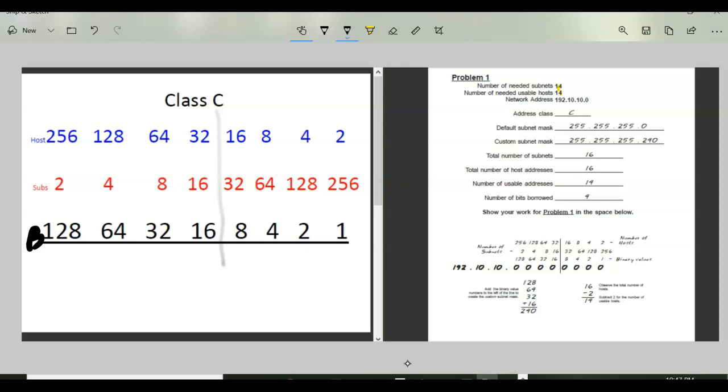I also need 14 usable hosts. Whenever you're working with your hosts, when you're dealing with the number of hosts per subnet you have to subtract two addresses from your range because the first address in every range is what we call the subnet number and the last address in every range is called the broadcast address.